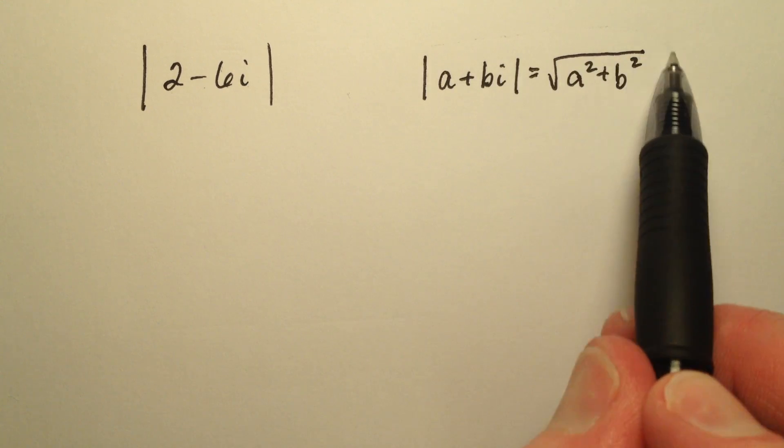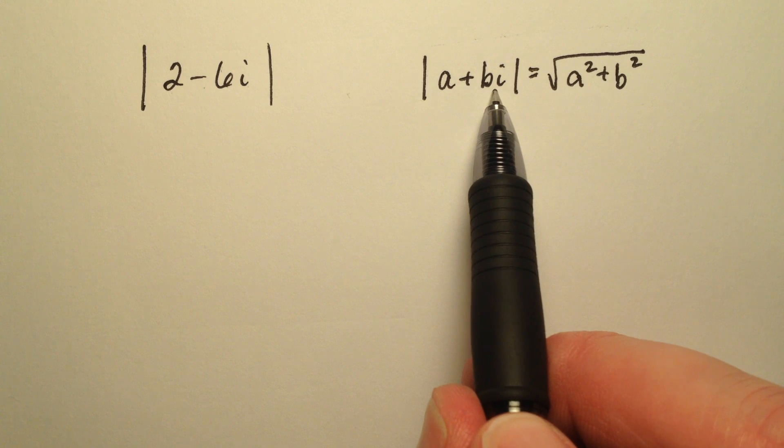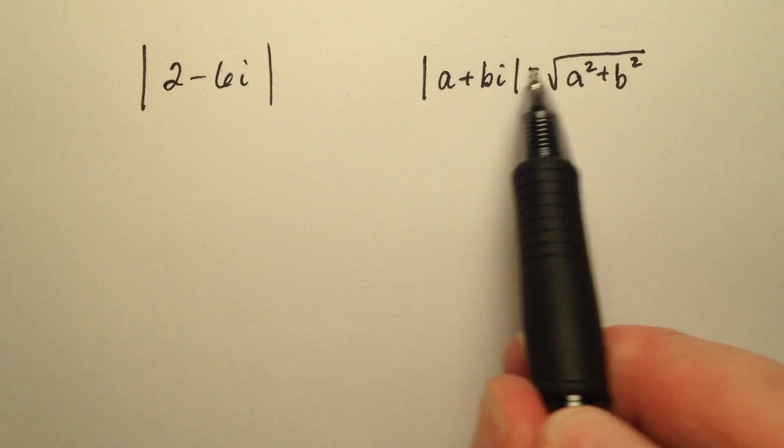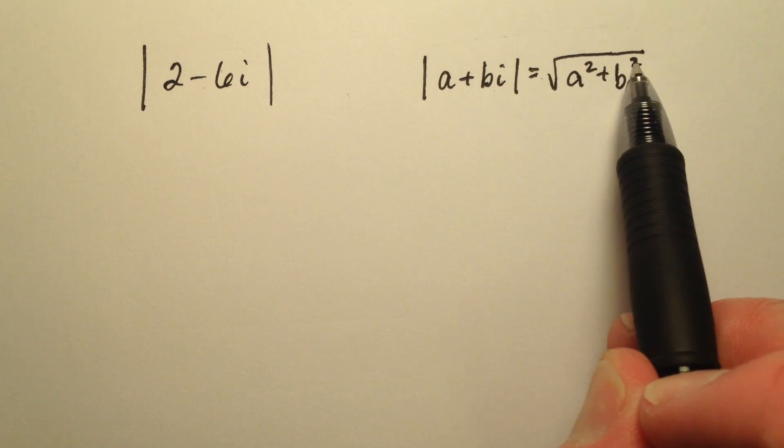Remember I have this nice formula - the absolute value of any complex number, a plus bi, is just going to be the square root of a squared plus b squared.